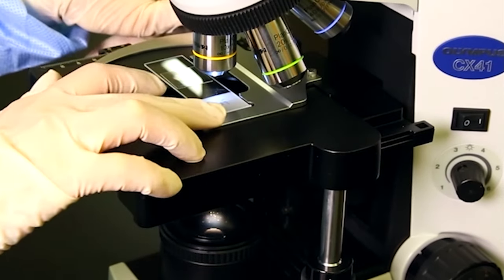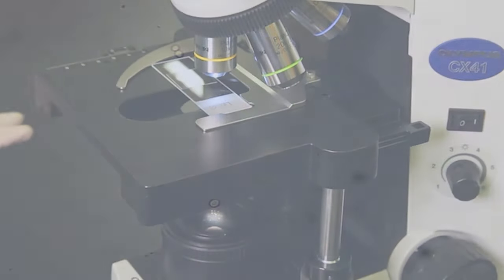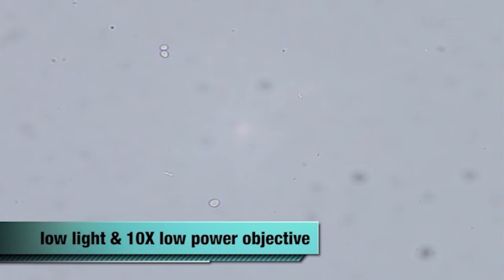Place the microscope slide on the stage of a bright field microscope. Focus the microscope using low light and the 10x low power objective. Scan the entire microscope slide, reading at least 10 fields using an S-shaped viewing pattern.